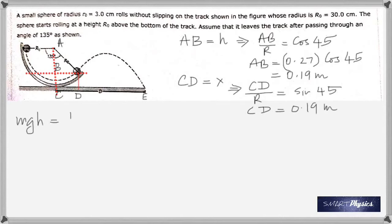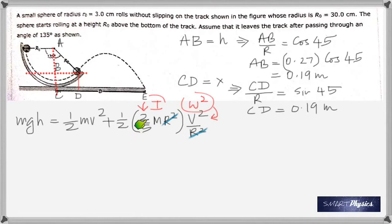Using conservation of energy, potential energy mgh at the top becomes kinetic energy of rotation plus kinetic energy of translation. Rotational kinetic energy is one half I omega squared. Because it's a solid sphere, I is 2/5 mr squared. Omega is v/r, and since it's omega squared, that's v squared over r squared, so the r squared terms cancel.